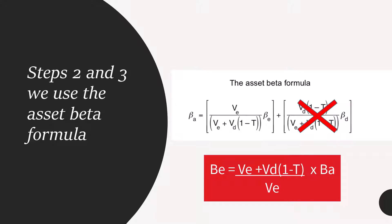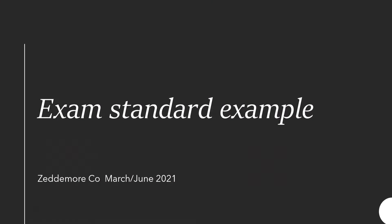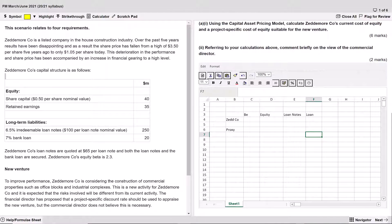I'm going to show you how to do these four steps using an exam example. The exam standard example I'm going to use is called Zeddymore Company from the March-June 2021 sitting. I'll be showing you this on the practice platform. Here I am on the practice platform using this Zeddymore Company question. The question says, using the capital asset pricing model, calculate Zeddymore Company's current cost of equity and a project-specific cost of equity suitable for the new venture. Then referring to the calculations, comment briefly on the view of the commercial director.